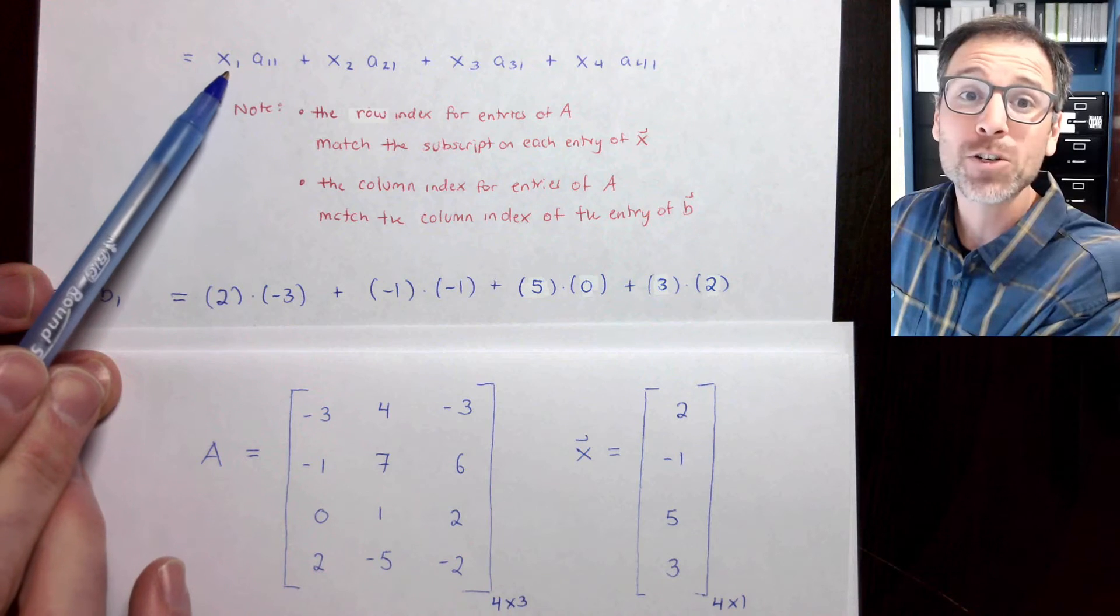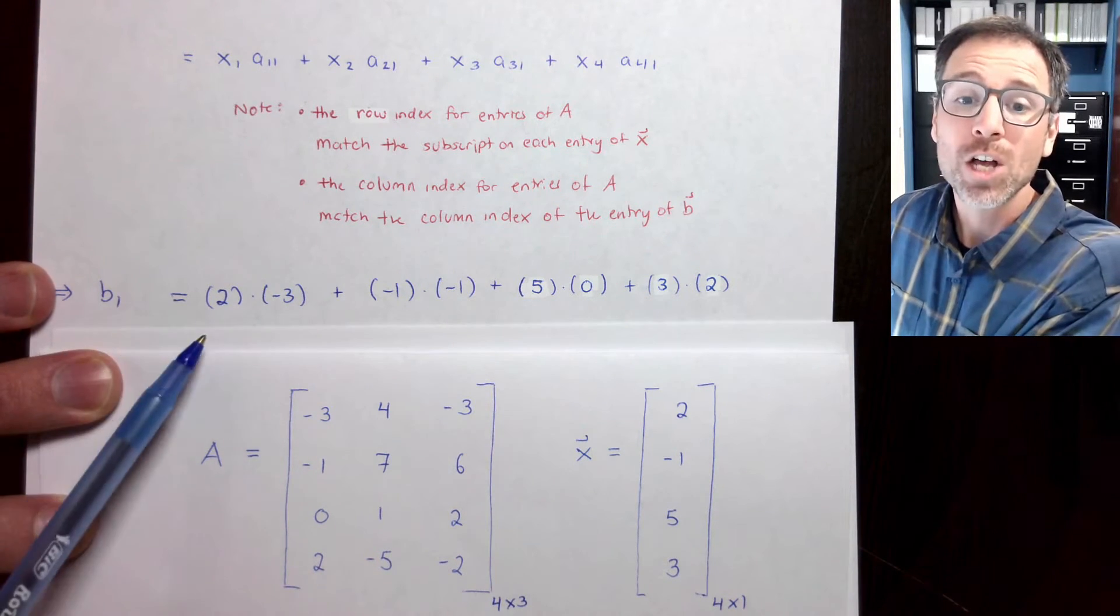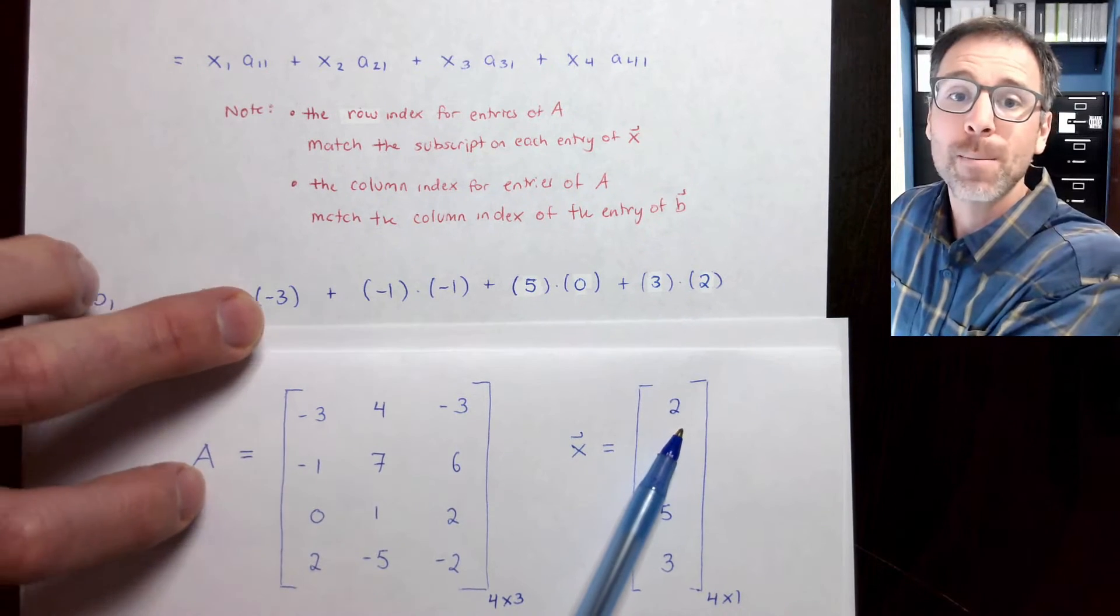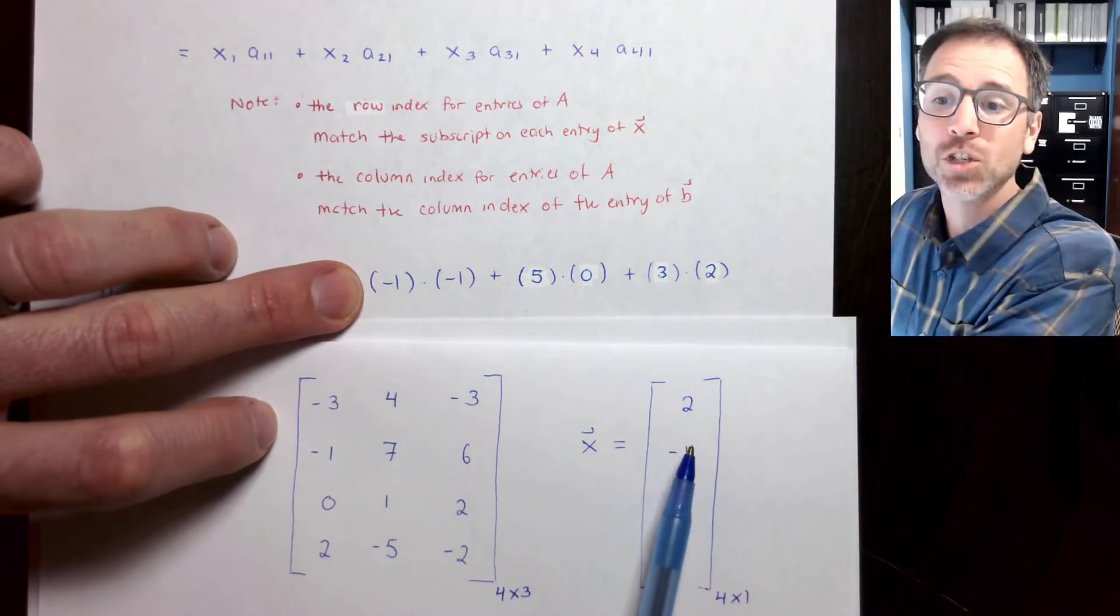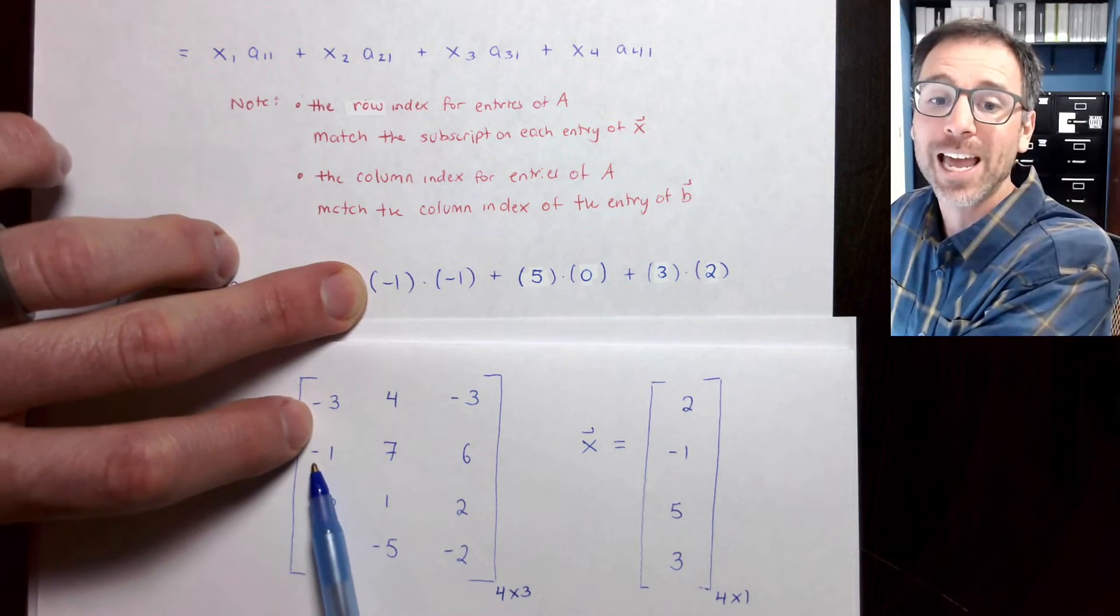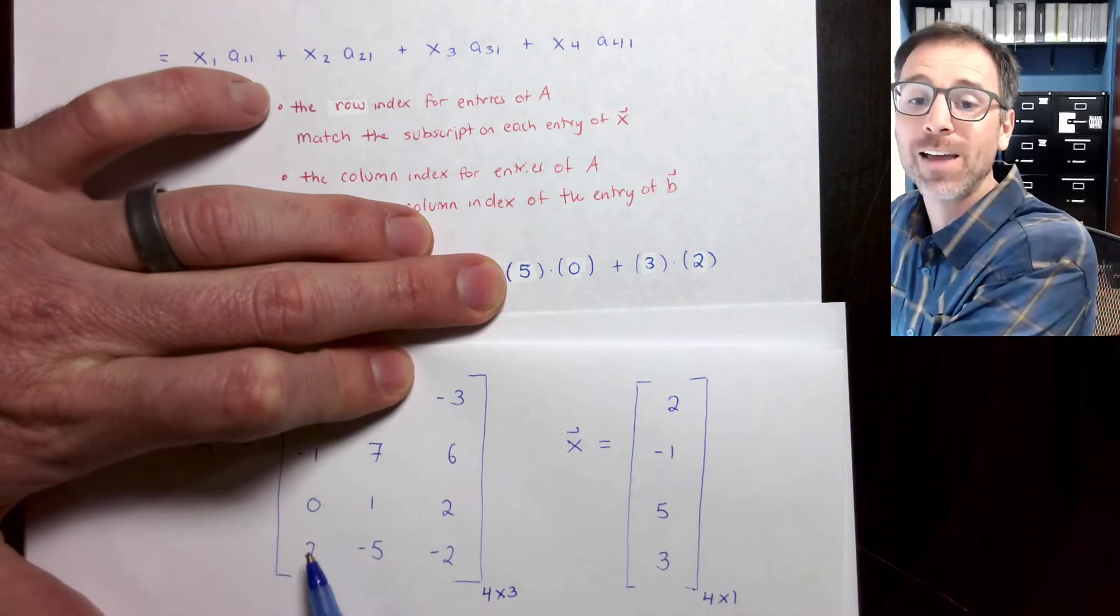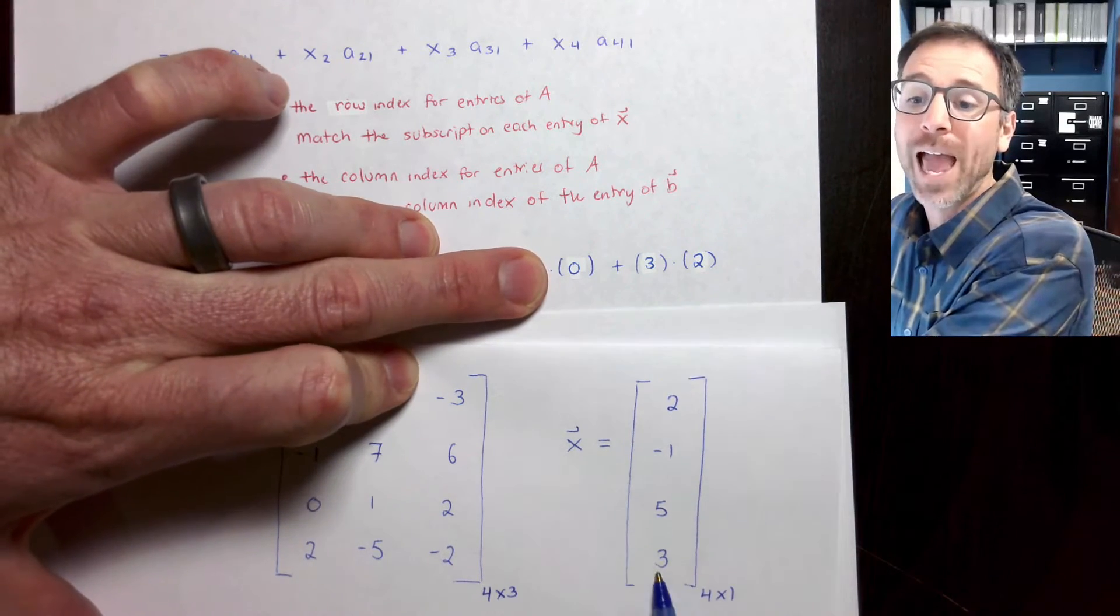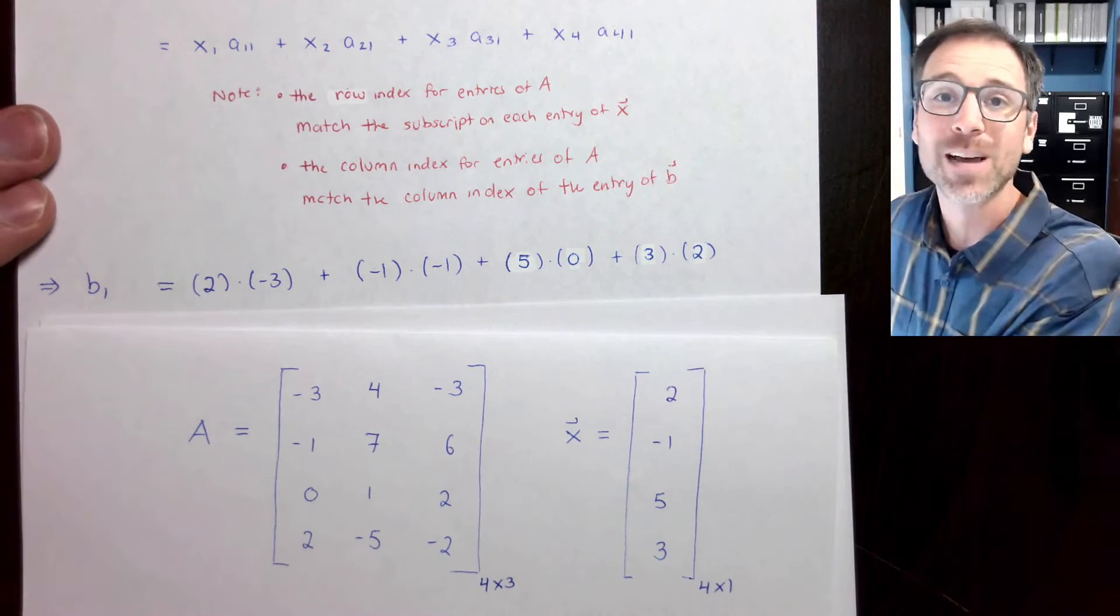Now let's just remember what the individual entries of x and the individual entries of the first column of A are. So x1 is going to be 2 multiplied by a11, which is negative 3. Then we add that to x2, which is negative 1, times a21, which is negative 1. Then we go down, x3 is 5, a31 is 0, and x4 is 3, a41 is 2. And here is the sum that I'm searching for.